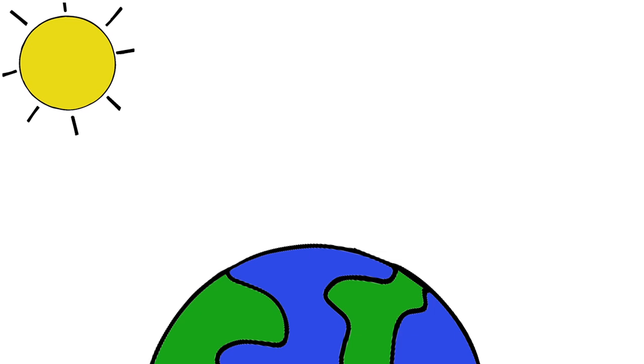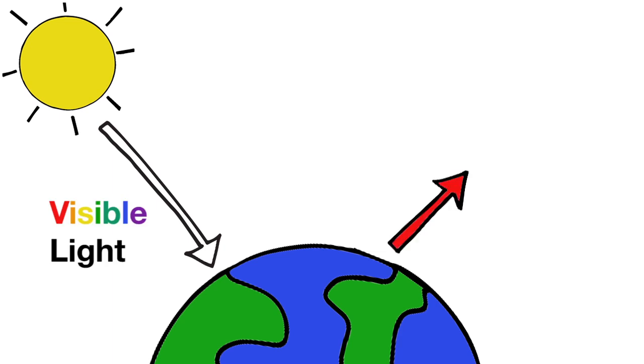The Earth absorbs light from the Sun, which is mostly visible light. To release that light energy, Earth also emits light. But because the Earth is cooler than the Sun, it emits lower energy infrared light. So, Earth's surface essentially transforms most of the visible light it gets from the Sun into infrared light.